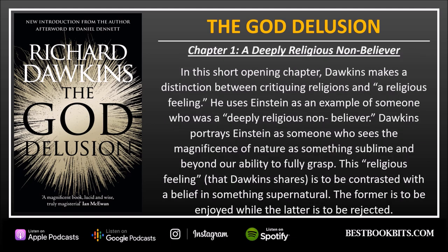Chapter 1: A Deeply Religious Non-Believer. In his short opening chapter, Dawkins makes a distinction between critiquing religions and a religious feeling. He uses Einstein as an example of someone who was a deeply religious non-believer — someone who sees the magnificence of nature as something sublime and beyond our ability to fully grasp. This religious feeling is to be contrasted with a belief in something supernatural: the former is to be enjoyed while the latter is to be rejected.